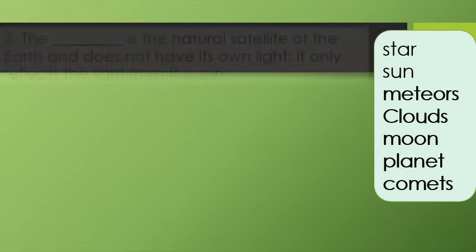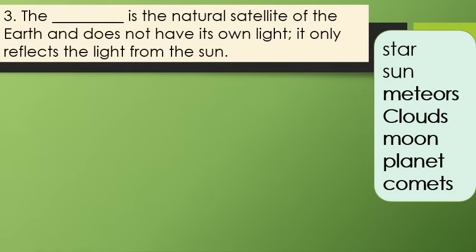Number 3. The blank is the natural satellite of the earth and does not have its own light. It only reflects the light from the sun.